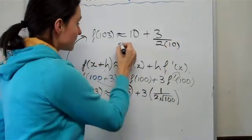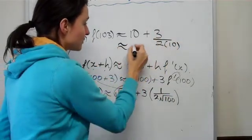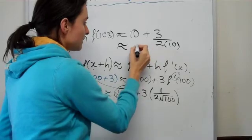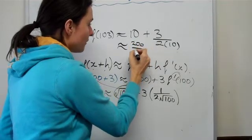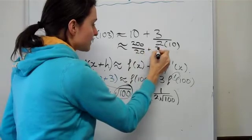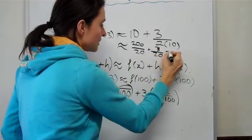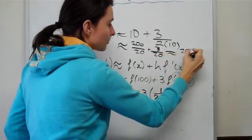Okay, so now as you can see, you can just add these two together. And it will just give you basically 200 over 20 plus 3 over 20, which is approximately equal to 203 over 20.